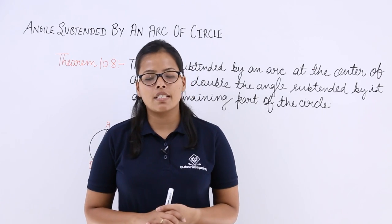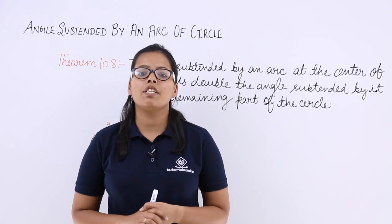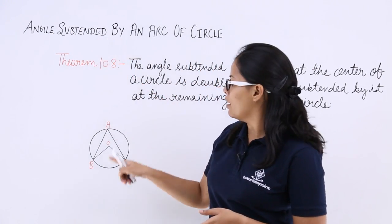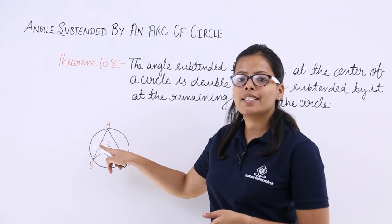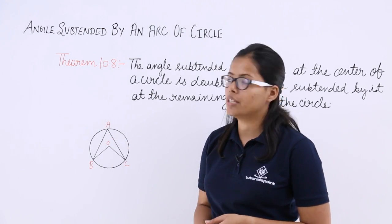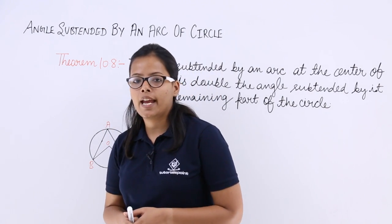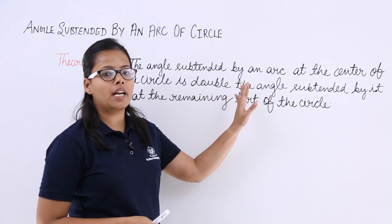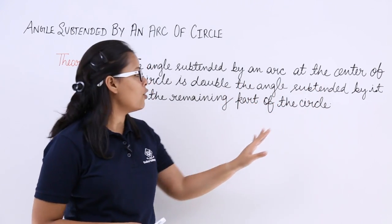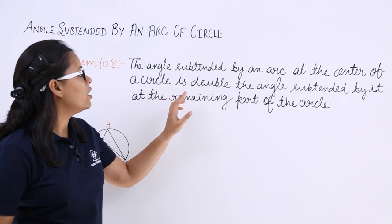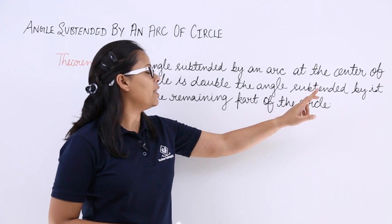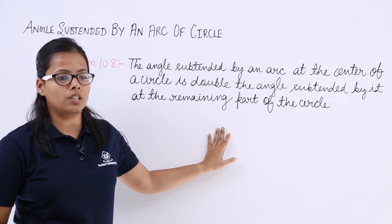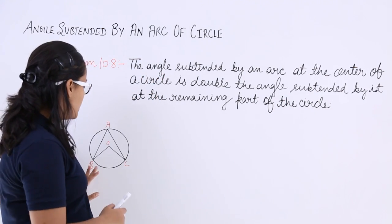Hello guys, let's discuss a theorem in this video lecture based on the angle subtended by an arc on the center of the circle. Theorem 10.8 says: the angle subtended by an arc at the center of the circle is double the angle subtended by it at the remaining part of the circle.